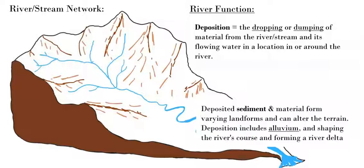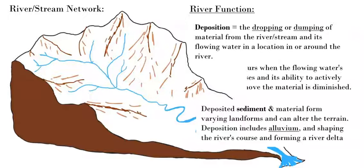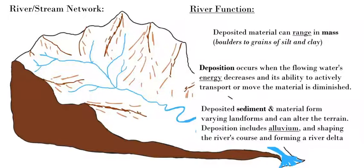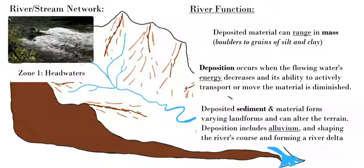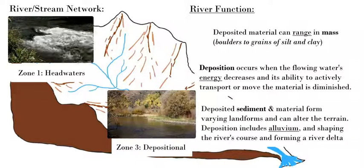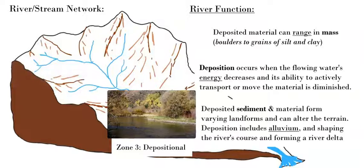Deposition is the dropping or dumping of sediment at a certain location when the water's energy is reduced or lost — it can no longer hold the material based on size and mass, ranging from large boulders and rocks down to the smallest silt, sand, and clay, which form alluvium. Deposition occurs at locations based on the velocity and energy of the river, linked to the zone. Zone one — the headwaters — has more energy and faster water, transporting larger material. Zone three — the older area of the river — has less energy and velocity, carrying less material and therefore experiencing much more deposition.